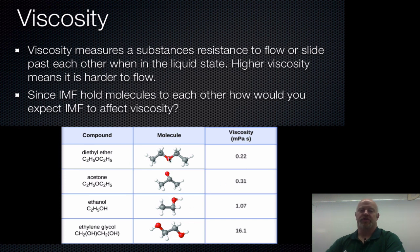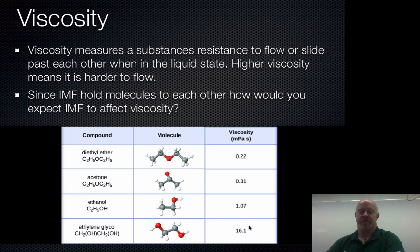The two that are just dipole-dipole have viscosities pretty close to each other. Acetone is a little bit higher because the oxygen is sticking out, giving it a slightly stronger internal electric force, versus diethyl ether where it's kind of hidden inside. Ethanol has a single hydrogen bonding site, while ethylene glycol has two locations for hydrogen bonding, giving it a bigger hydrogen bonding effect and higher viscosity.